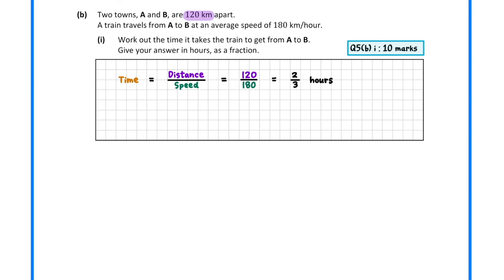In part B, we are told that two towns are 120 km apart. A train makes the journey at an average speed of 180 km per hour. In part 1, we must find the time it takes the train to make the journey. To find the time, we divide the distance, 120 km, by the speed, 180 km per hour. Simplifying the fraction gives us an answer of 2 over 3 hours.